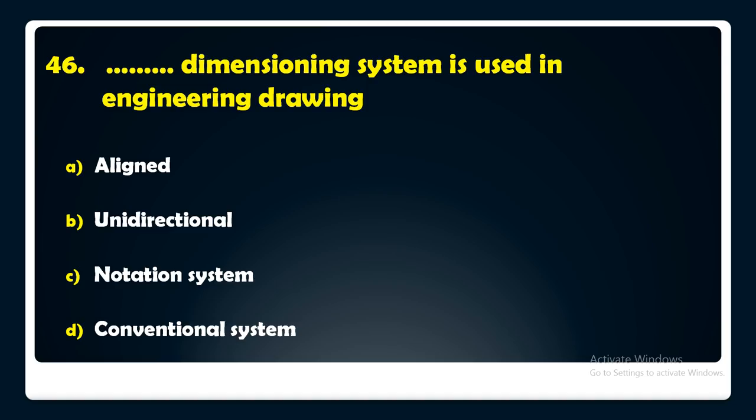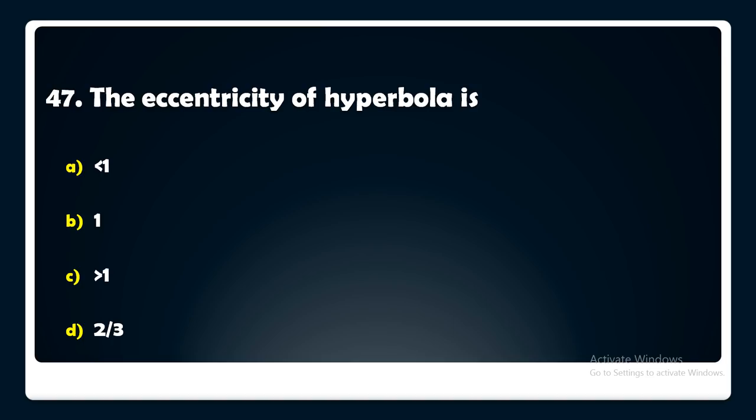The eccentricity of a hyperbola is — less than 1, equal to 1, greater than 1, or 2/3? The answer is: the eccentricity of a hyperbola is greater than 1.